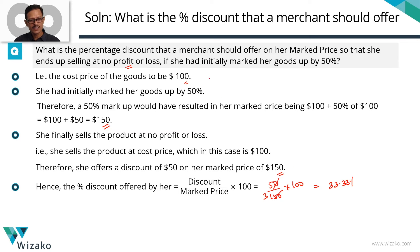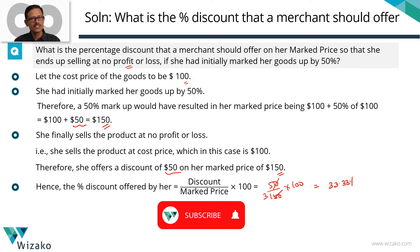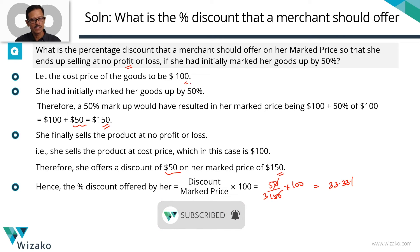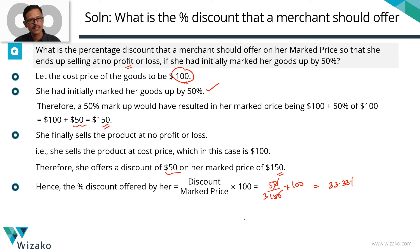Note one thing. In this assumption, look at the dollar value of the markup — that's $50. Look at the dollar value of the discount — that's also $50. It has to be the same: if you mark it up by $50 and want to sell at no profit, no loss, the dollar value of the discount must also be $50. The markup is computed as a percentage of the cost price — $50 as a percentage of $100 gives 50%. The discount is offered as a percentage of the marked price. So the same $50 discount, but the base is now 150, not 100 — which is why the discount percentage is 33.33%.